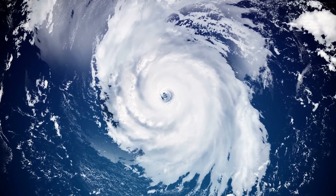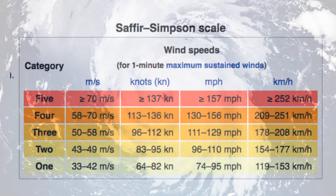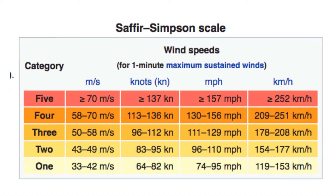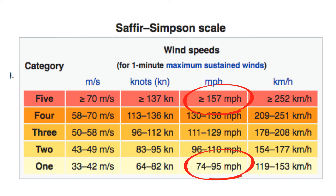Hurricane strength is measured by wind speed and barometric pressure. The minimum wind speed to be classified as a hurricane is 74 miles per hour. Category 5 hurricanes will have wind speeds greater than 157 miles per hour.